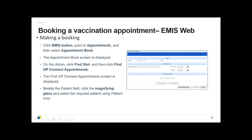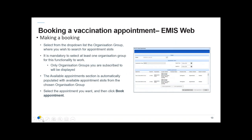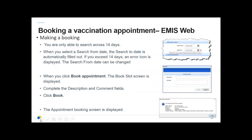The GP Connect appointment screen is displayed. Beside the patient field, click the magnifying glass and find the patient you want to book in. From the dropdown list, add an organisation group — you must add at least one. Available appointments are automatically populated; select the one you want. Note you can only search 14 days at a time, so to book both vaccine appointments you'll need to do one search followed by another for the later appointment. Click Book, add a description and comment if desired, click Book again, and a confirmation appears showing the patient, appointment time, duration, and organisation location address.